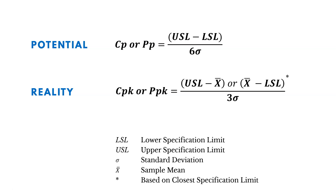For CPK or PPK, the calculation changes based on what the closest specification limit is. If the closest limit is the upper specification limit, we take the upper specification limit, subtract the sample mean (X-bar), and divide by three sigma. If the lower specification limit is the closest, we take the mean, subtract the lower specification limit, and divide by three sigma.